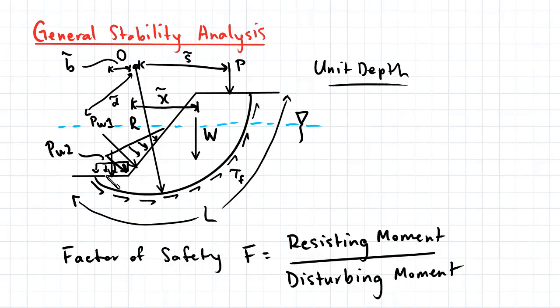Here we have a slope experiencing rotational slip, which we have assumed to be circular. We've set a center here, and this center acts as the center for this circle. The distance from the center to the slip surface is a radius r.